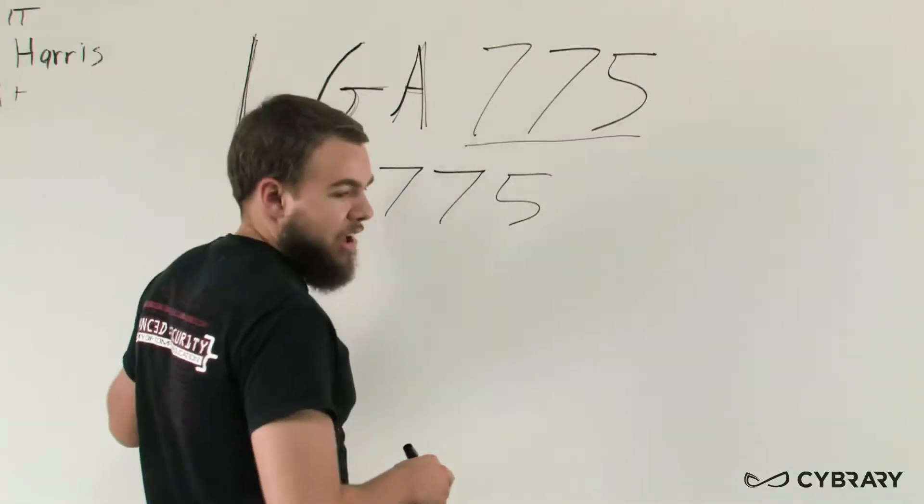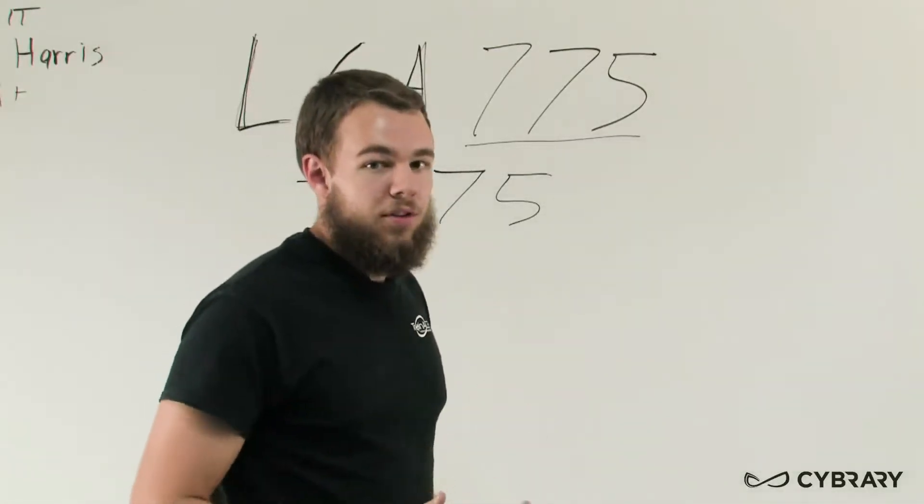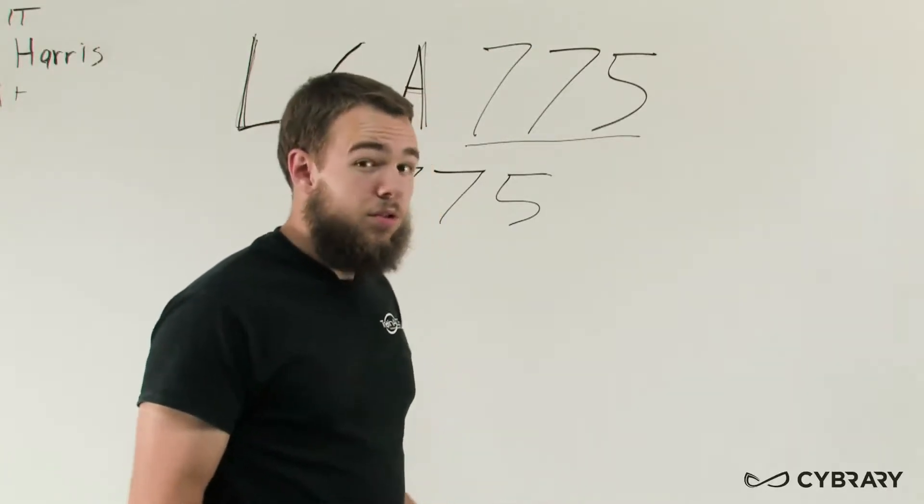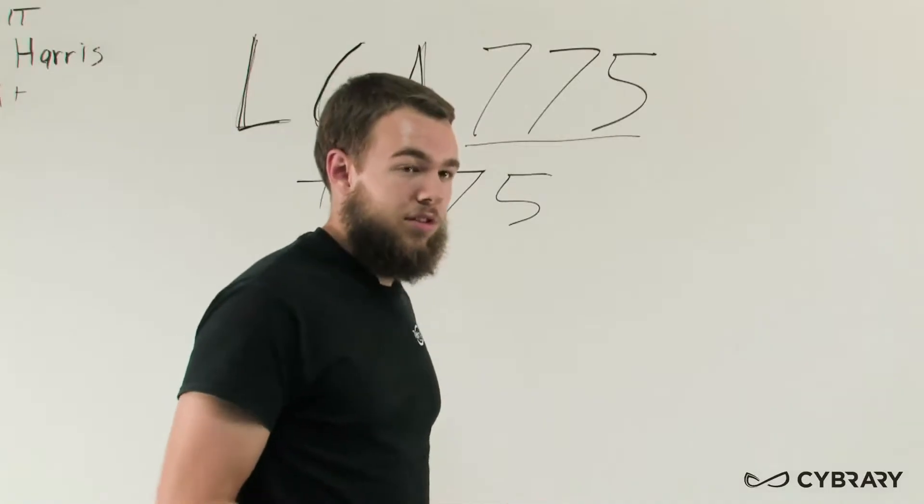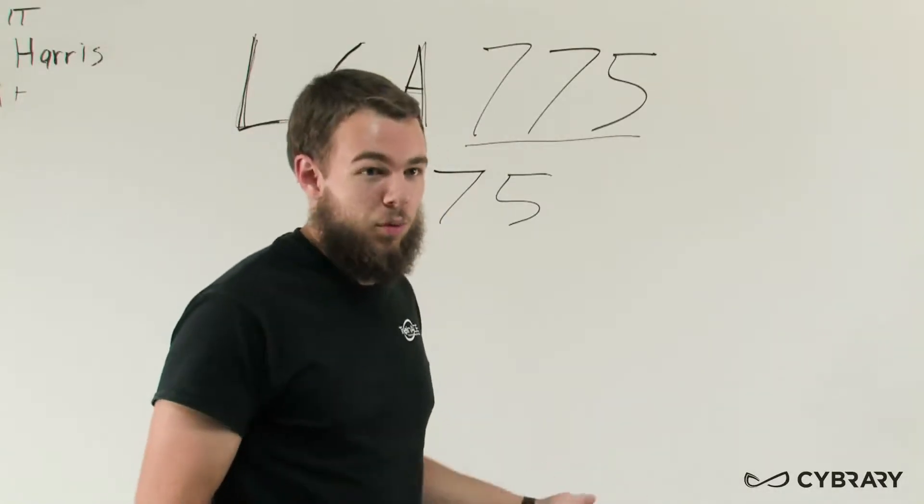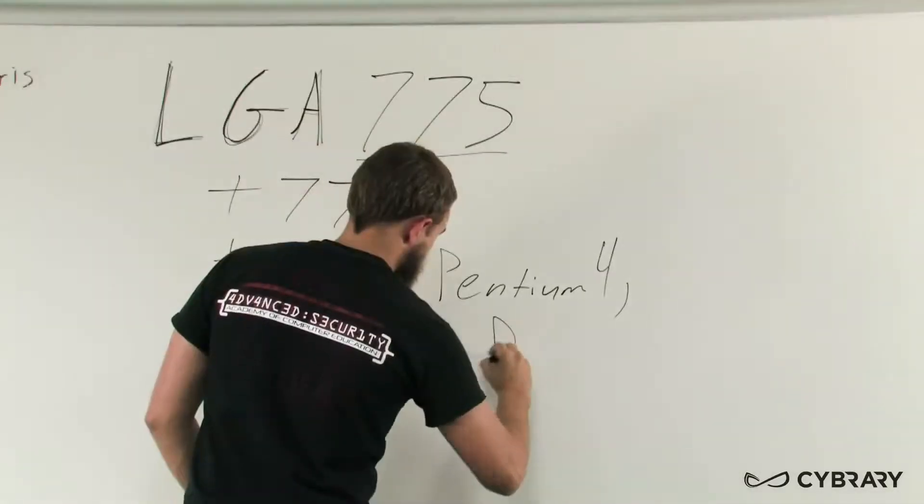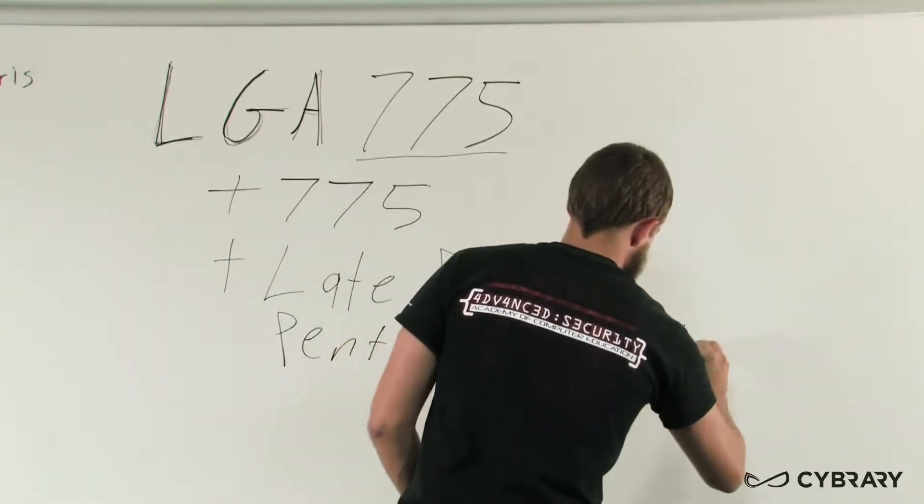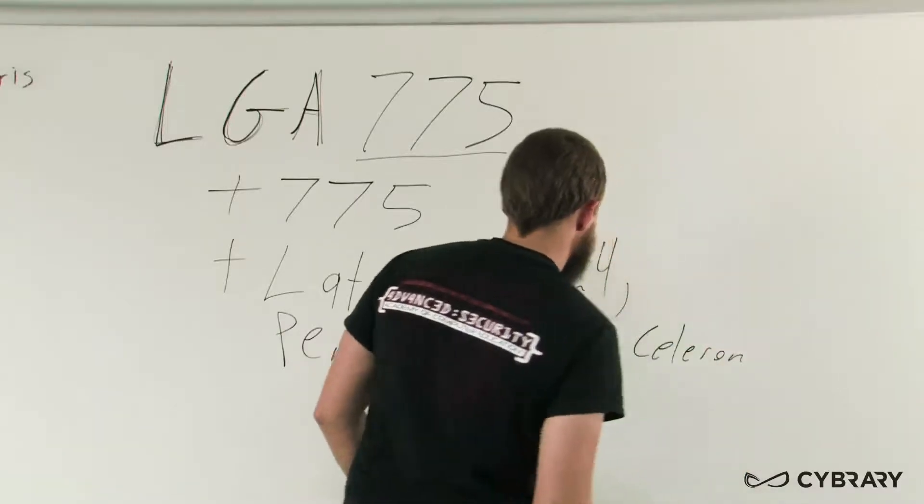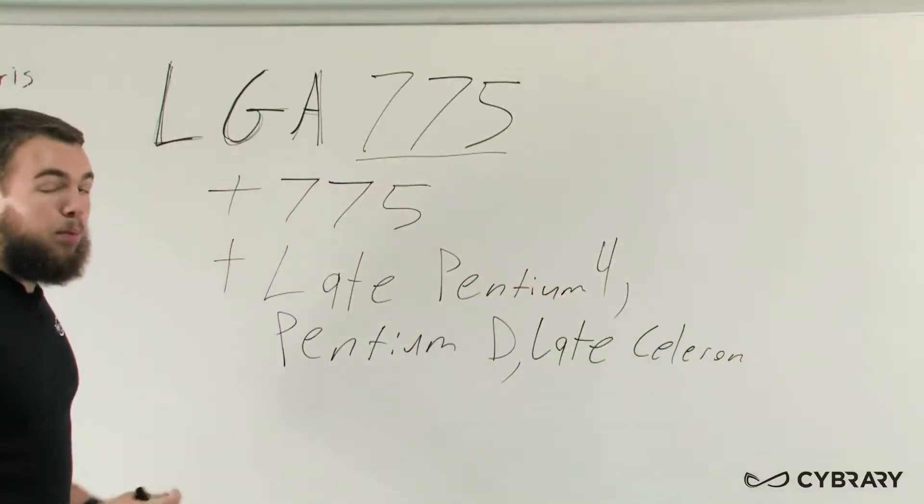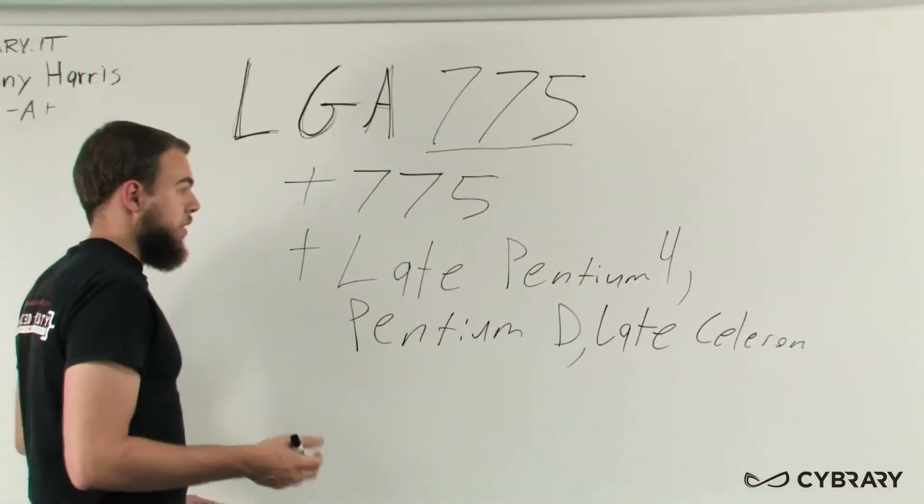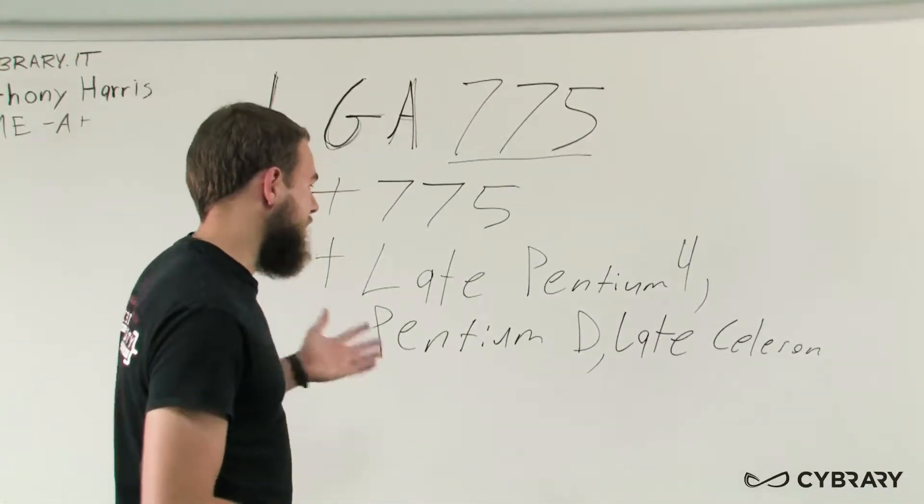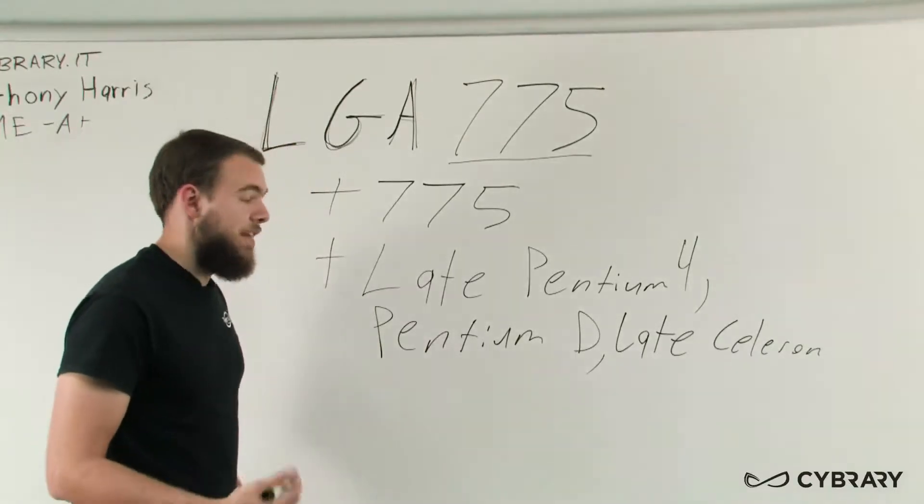Now the LGA-775 is about 2006 when it was released so it's a bit older type socket but we do still see them. 2006 wasn't too long ago but in computer years we can consider that a while ago. Some of the type of computers that we'll see with this socket may be late Pentium 4s as well as some Pentium Ds and late Celerons. There may be other types of boards or processors that use this socket but those are going to be some of the general ones: the late Pentium 4s, Pentium Ds and late Celerons.